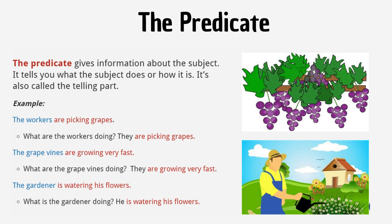Example: 'The workers are picking grapes.' What are the workers doing? They are picking grapes. 'The grape vines are growing very fast.' What are the grape vines doing? They are growing very fast. 'The gardener is watering his flowers.' What is the gardener doing? He is watering his flowers.